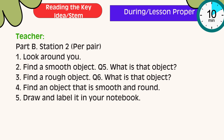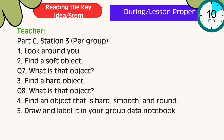Part B, Station 2 — per pair: Number 1, look around you. Number 2, find a smooth object. Answer Question 5: What is that object? Number 3, find a rough object. Question 6: What is that object? Number 4, find an object that is smooth and round. Number 5, draw and label it in your notebook. For Parts C and D, if there is limited time, you can do it tomorrow.